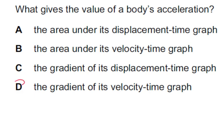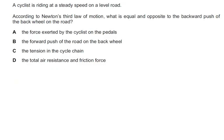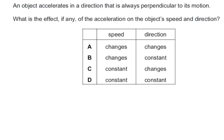What gives the value of a body's acceleration? It's the gradient of its velocity-time graph. A cyclist riding at steady speed on a level road — according to Newton's third law, the forward push of the road on the back wheel is equal and opposite to the backwards push of the back wheel on the road. An object accelerates perpendicular to its motion: the speed remains constant but the direction changes, so the answer is C.